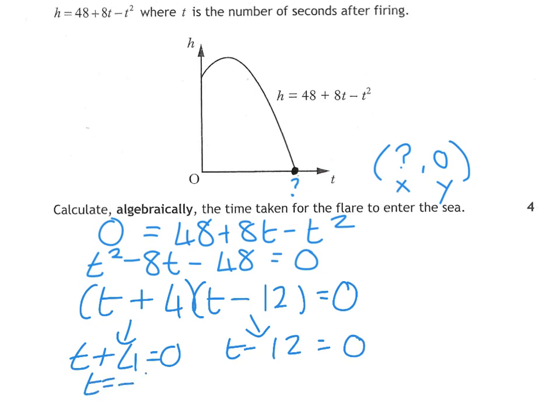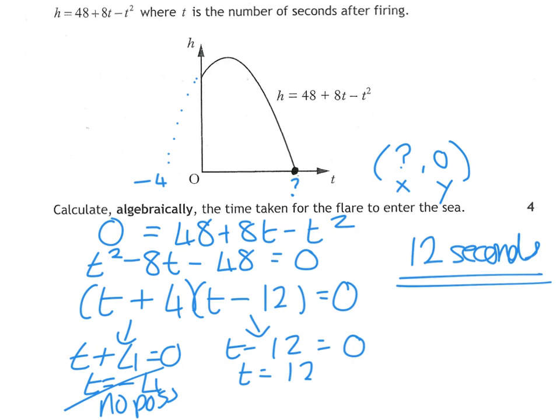You then put that equal to 0 and that equal to 0. That gives you T as minus 4, and that gives you T as 12. See that minus 4? That's actually what this one would be graphically here. Your time can't be negative, so we say not possible for that one. So T equals 12, the time taken is 12 seconds. Thanks very much.